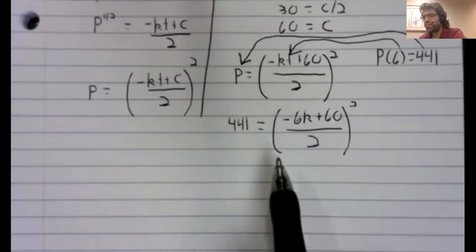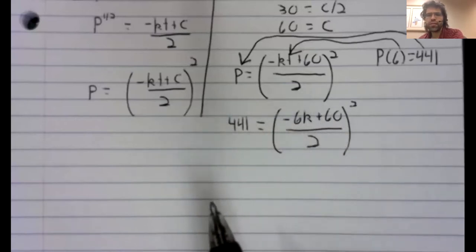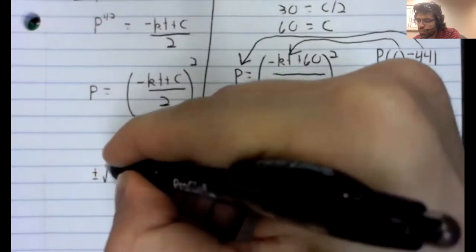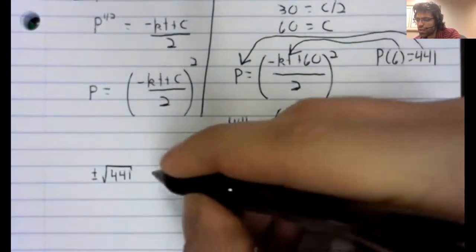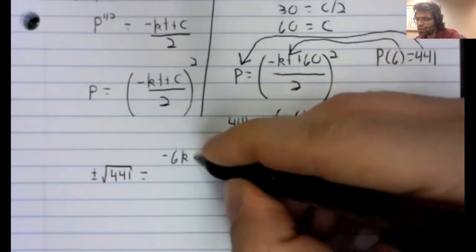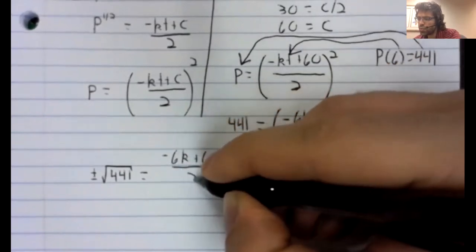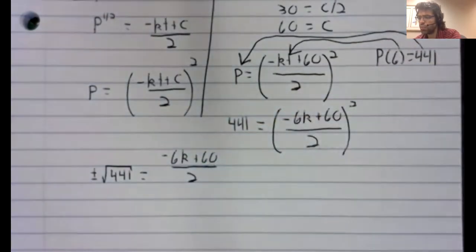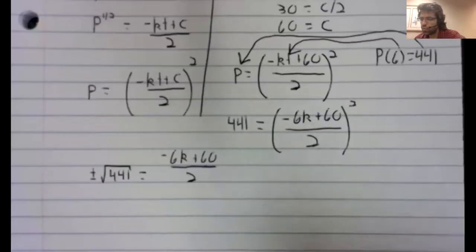Once again, this has two solutions. We can take a positive or negative square root. We'll find both of the square roots and then figure out which value of k is correct. A little down the road. So the square root of 441 is 21.